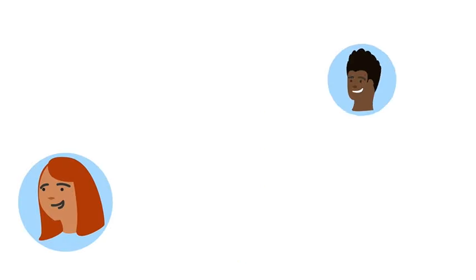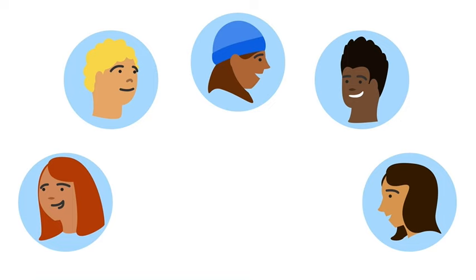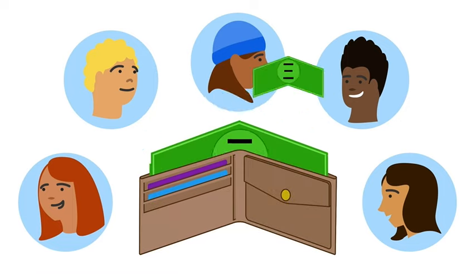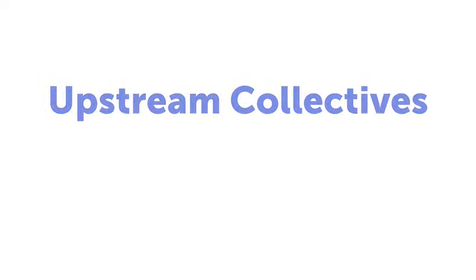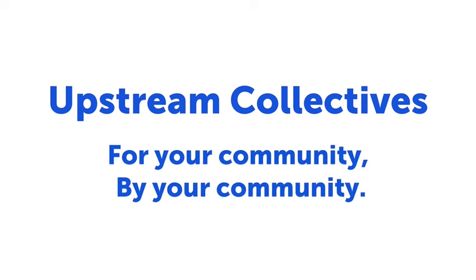An Upstream Collective is an easy-to-use community platform built on the blockchain to help you make decisions, pool money, and take actions in a way that is equitable, efficient, and transparent. Upstream collectives, for your community, by your community.